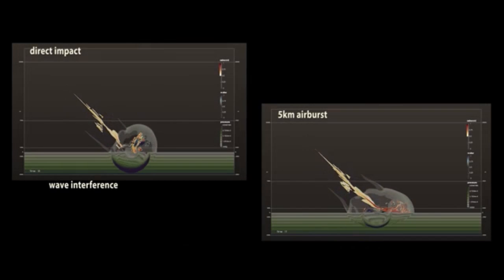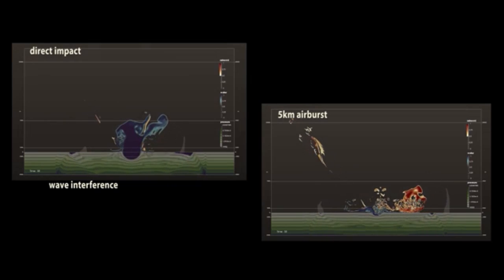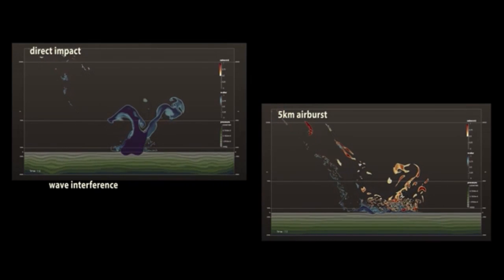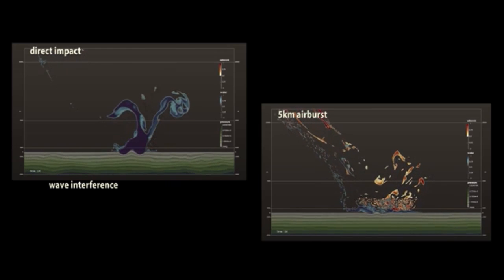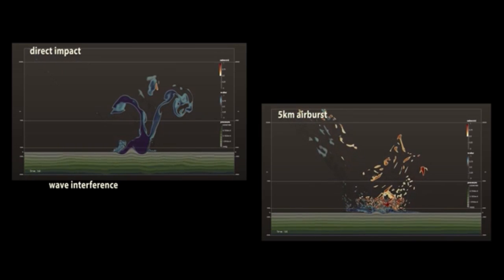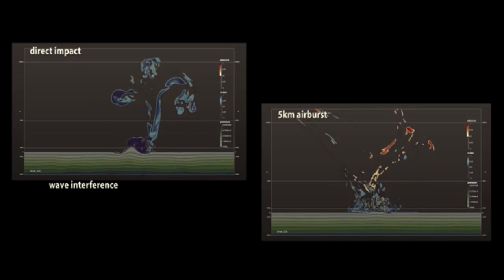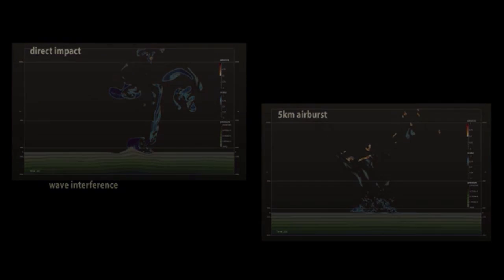Interestingly, there is a stronger wave interference in the direct impact simulation, but such an impact is more likely to create a tsunami because of the greater height of the splash. This may indicate that a tsunami is more likely to be formed during a direct impact than an airburst. Previous simulations had led us to believe that the opposite was true.